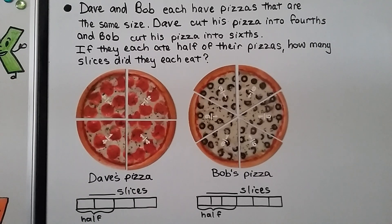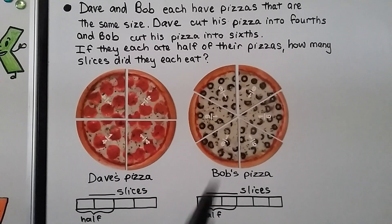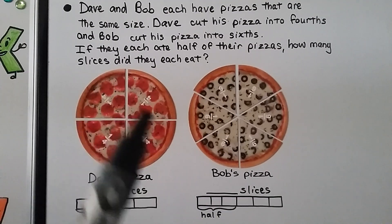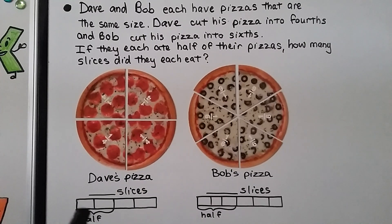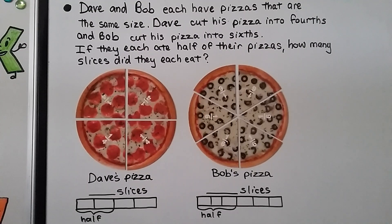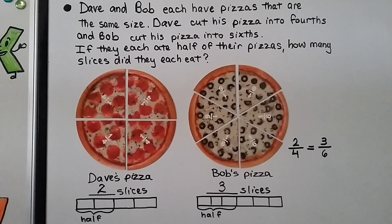Dave and Bob each have pizzas that are the same size. Dave cut his pizza into fourths and Bob cut his pizza into sixths. If they each ate half of their pizzas, how many slices did they each eat? We can use models like these pizzas or draw a bar to help. Dave had his pizza split into four equal pieces and ate half, so that would be two slices. Bob had his split into six pieces and ate half, so that would be three slices. Two-fourths is equal to three-sixths — they're both half.